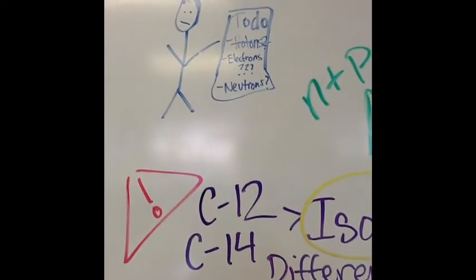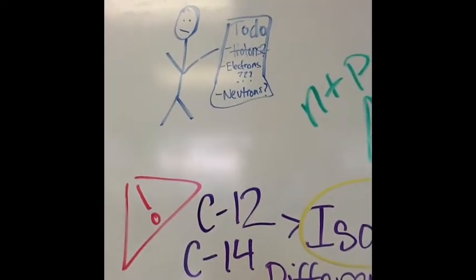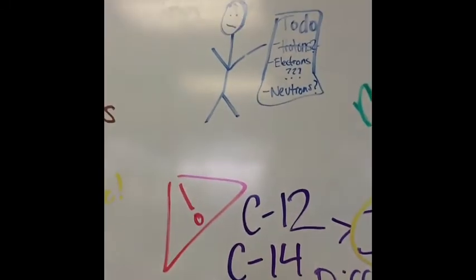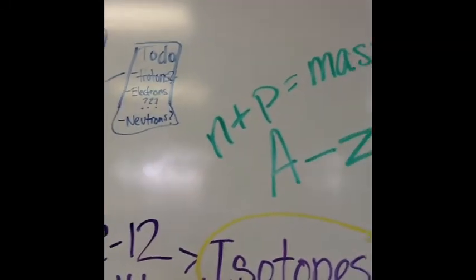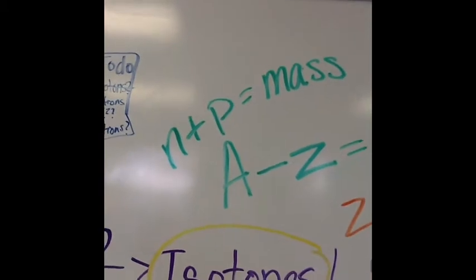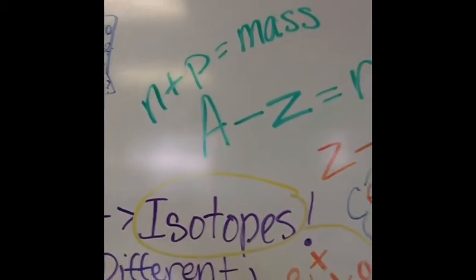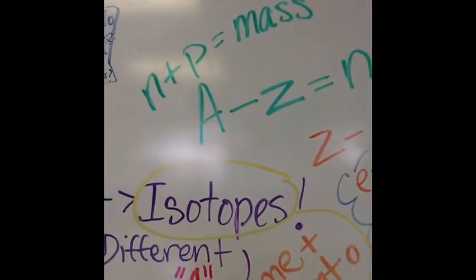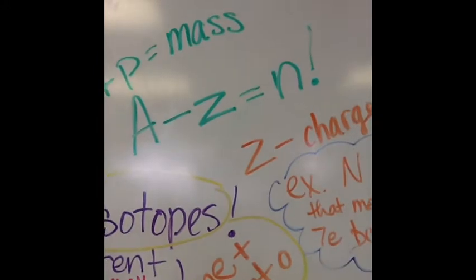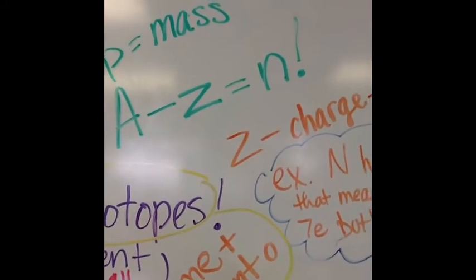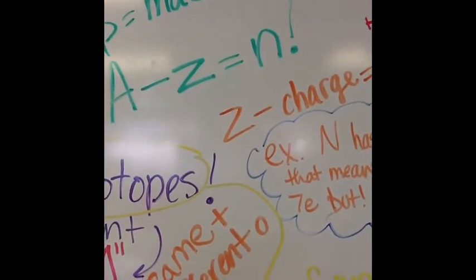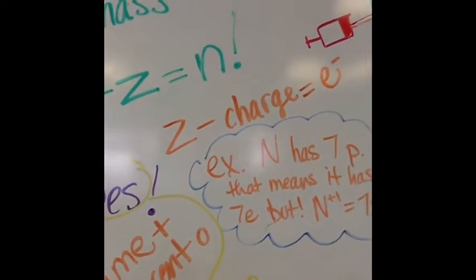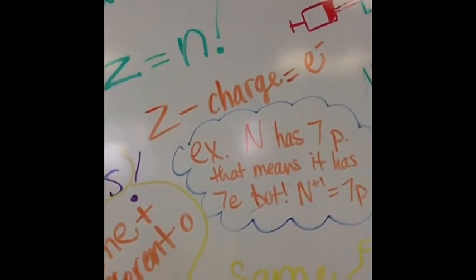I'm sure you're thinking: we know how to find the number of protons, but how do we find the number of electrons and neutrons? Since neutrons and protons make up the mass of the atom, the mass number A minus the atomic number Z equals the number of neutrons. And for electrons, the atomic number minus the charge of the atom equals the number of electrons.